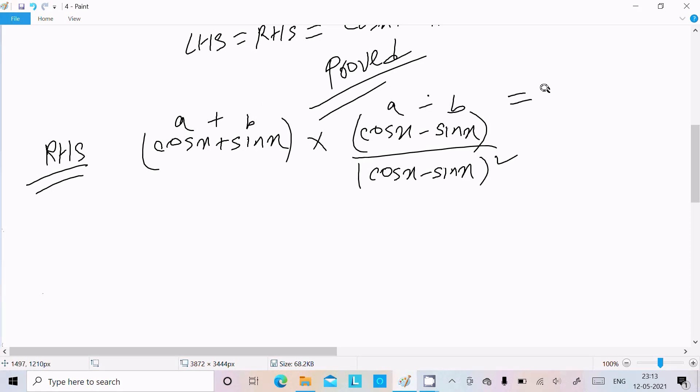The formula is a squared minus b squared. So we can write here cos squared x minus sin squared x, here after cosx minus sinx.